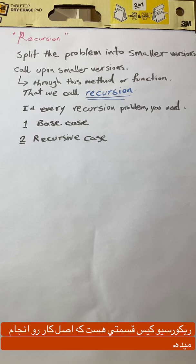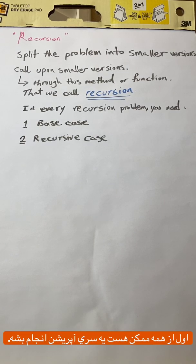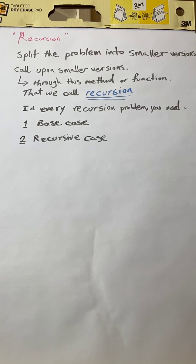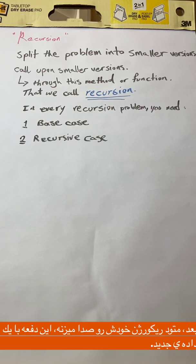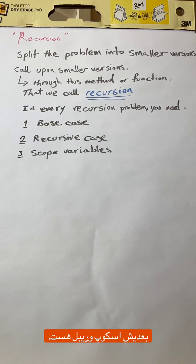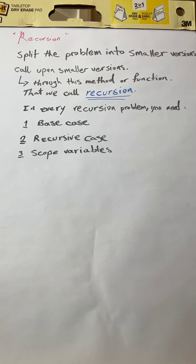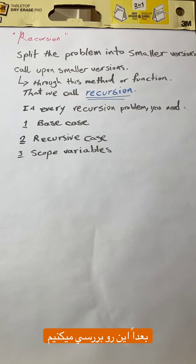Recursive case is the part that does the work. So the first thing you may have in this case is a few operations, then you're going to have the recursive method call upon itself but this time changing the input parameters. Next is scope variable. Let's come back to this one as we move forward.